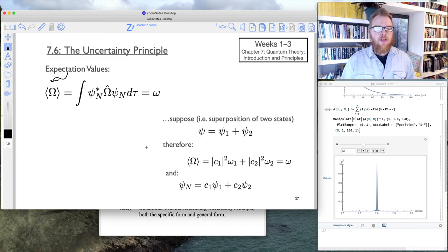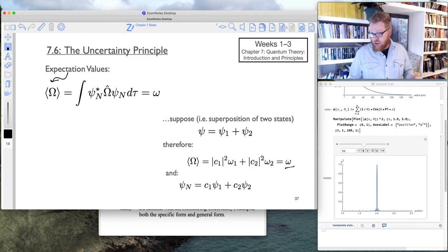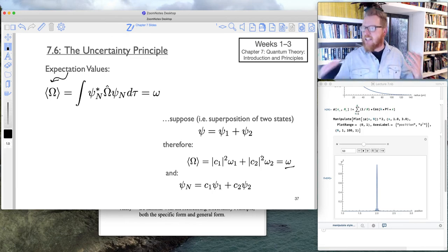Again, going on this example of maybe just supposing two states, a superposition of two states, mathematically speaking, the expectation value will be the square average of those results, which is given by omega. This integral here is not unique to quantum mechanics, this is just a mathematical operation to carry out this average.